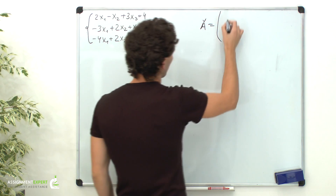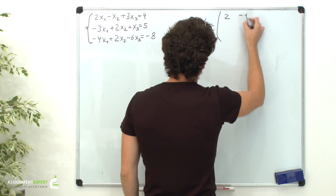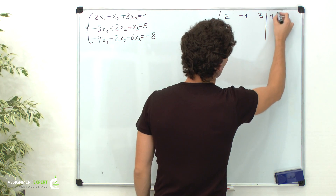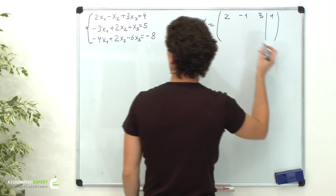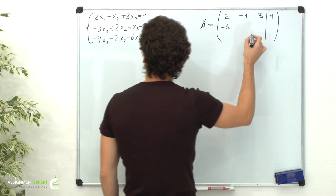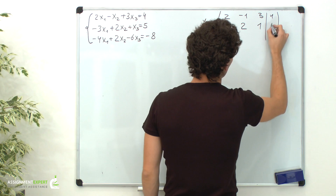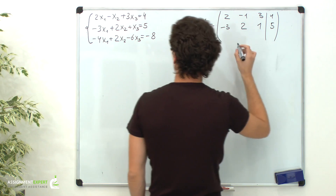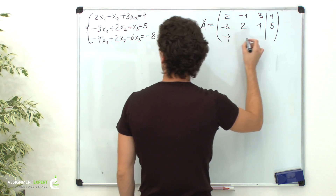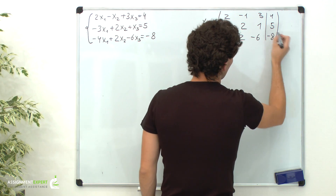In the first row we have 2, negative 1, 3, and 4. In the second row, negative 3, 2, 1, and 5. And in the third row, negative 4, 2, negative 6, and negative 8.